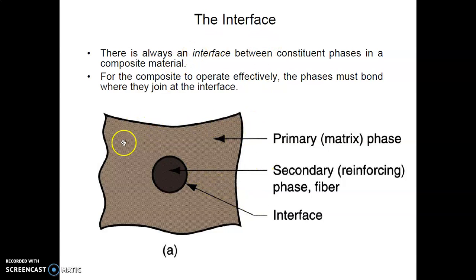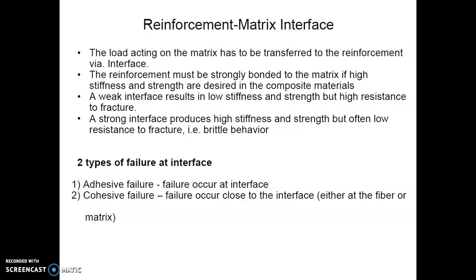There is always an interface between the constituent phases in a composite material. For the composite to operate effectively, the phases must bond at the interface. The load acting on the matrix has to transfer to the reinforcement via the interface. The reinforcement must be strongly bonded to the matrix if high stiffness and strength are desired.